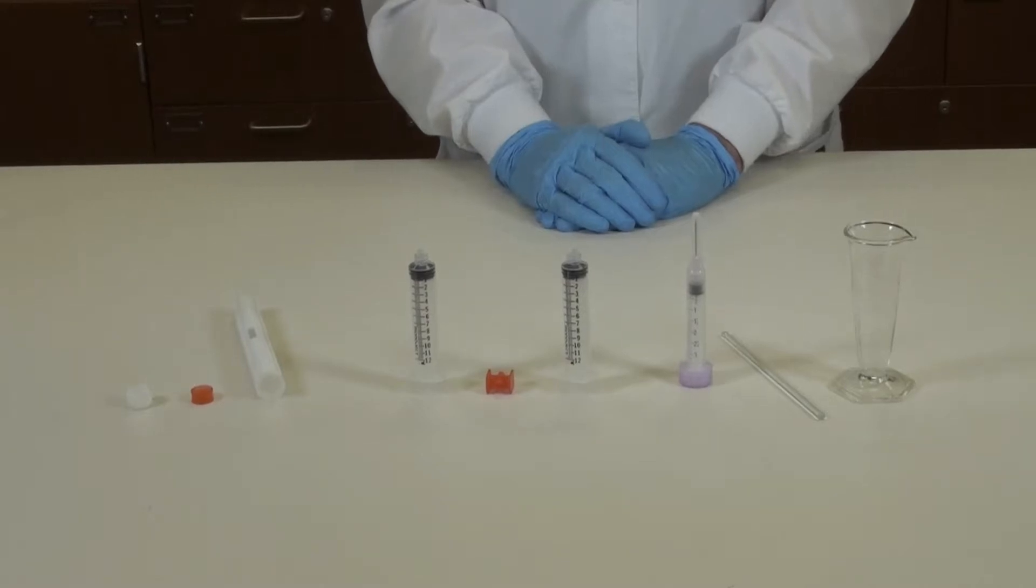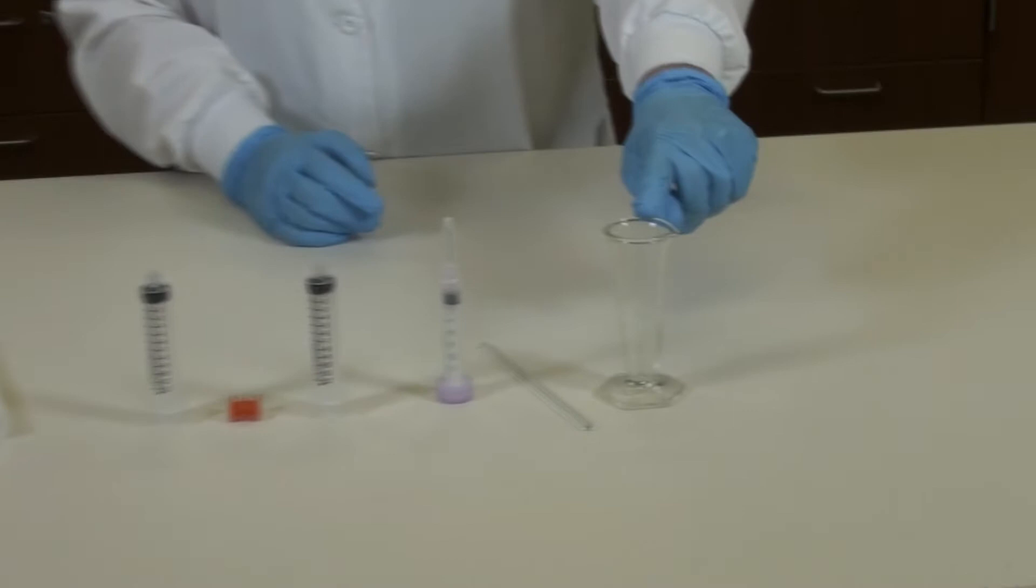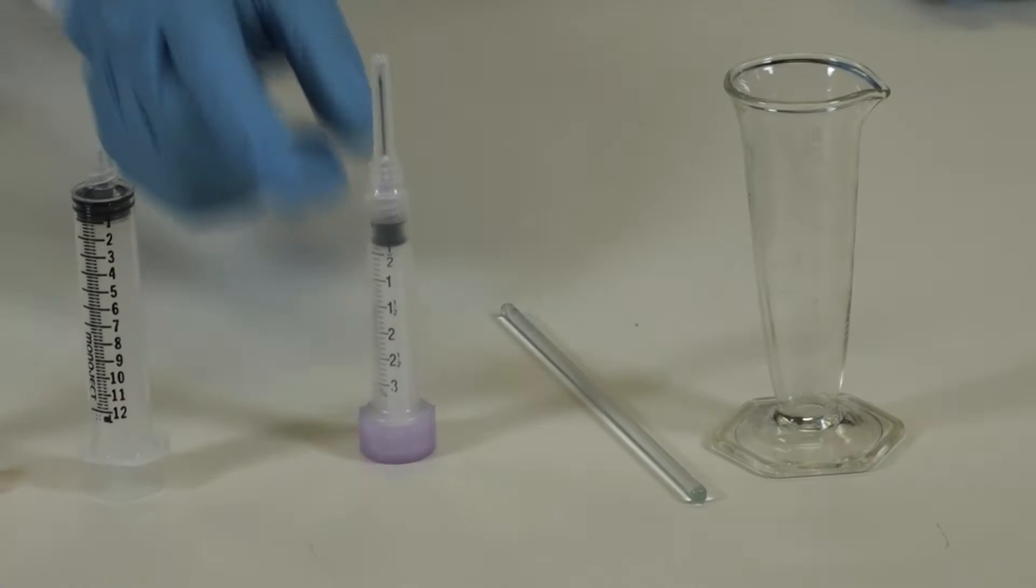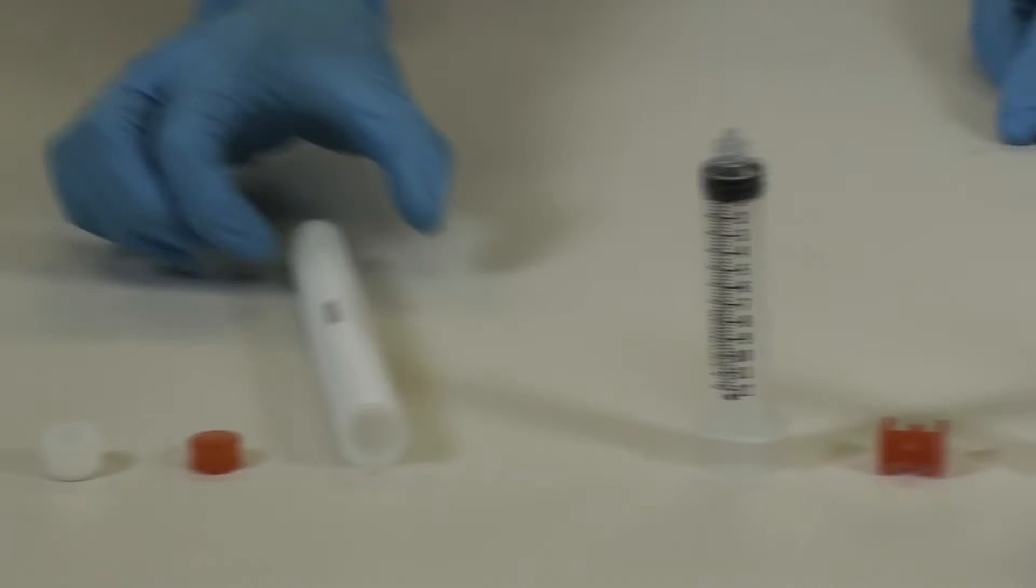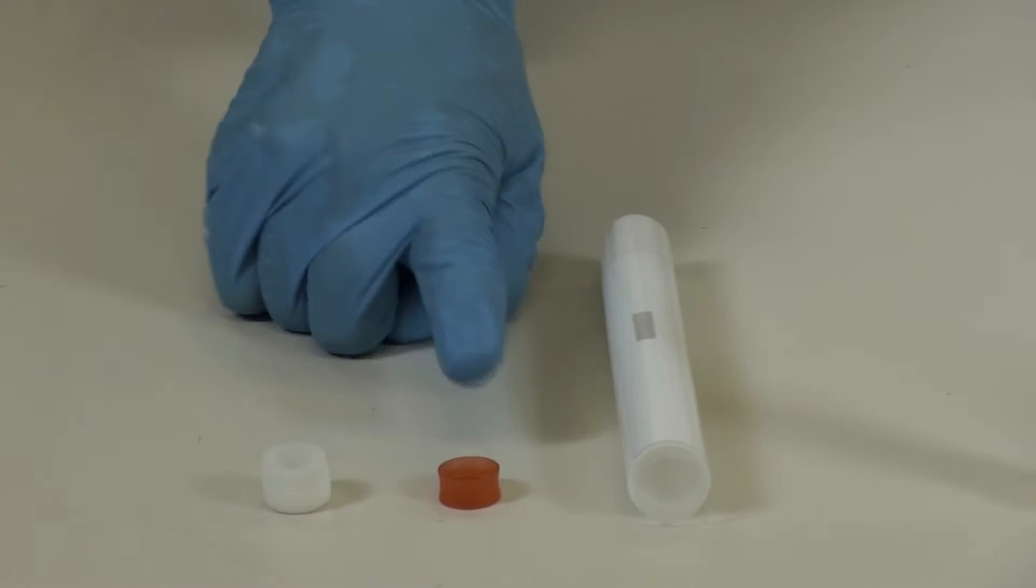The supplies required for the PLO gel this week will be a 1 ounce graduated conical, a glass stirring rod, a 3 ml syringe with a needle, two 12 ml syringes with this red syringe connector, and an AccuPen that comes in three pieces: the tube that you load the final product, the red cap, and then the end cap.